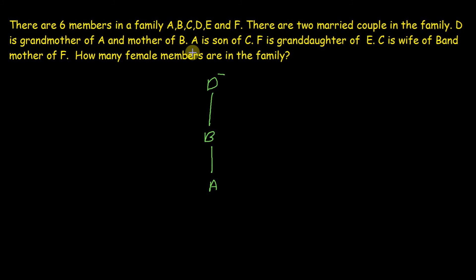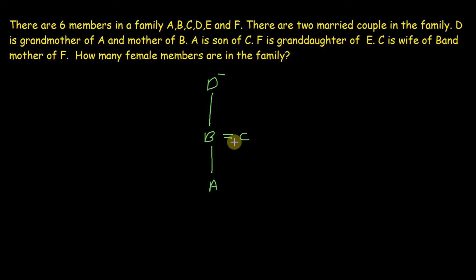The next line is A is son of C. So C should come in this place because A is son of B and also son of C, which means B and C are a married couple. We are not yet sure who is male and who is female, but we know A is male, so we put a plus sign on A.